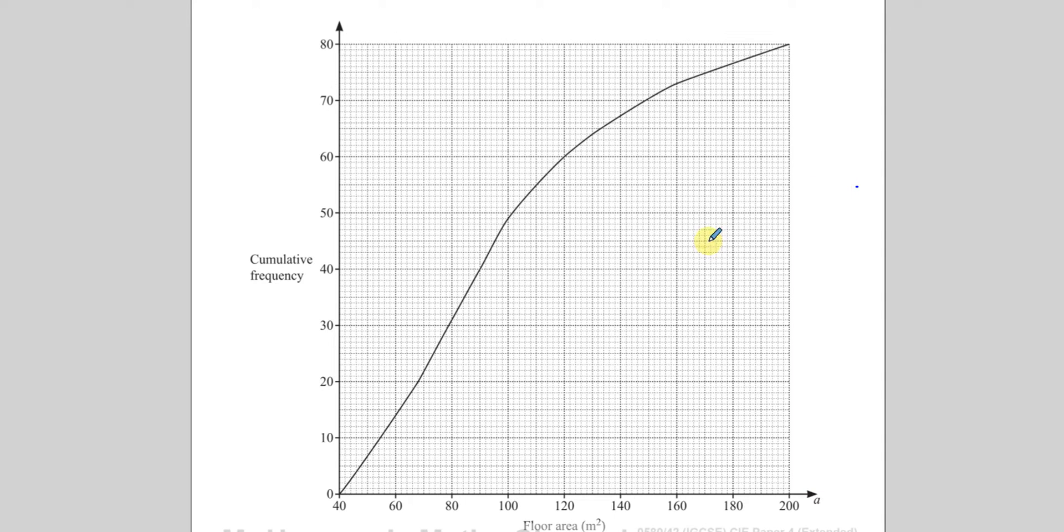Now the median is basically the middle value when everything is placed in order of size. To find the median or estimate the median using a cumulative frequency curve, you basically look at the y-axis, see how far it goes, make sure that the curve goes up to that point. Sometimes they do trick you. Here there's no problem. That's 80, and the curve goes up to 80. The middle value, you do 80 divided by 2, that gives you 40. You're looking for the 40th term.